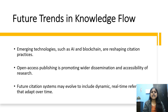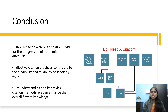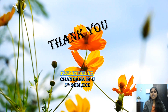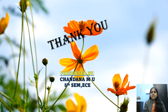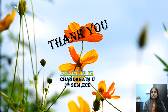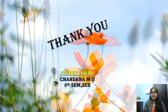Future citation systems may evolve to include dynamic, real-time references that adapt over time. Emerging technologies such as AI and blockchain are reshaping citation practices, and open access publishing is promoting wider dissemination and accessibility of research. Knowledge flow through citation is vital for the progression of academic discourse, and effective citation practices contribute to the credibility and reliability of scholarly work. By understanding and improving citation methods, we can enhance the overall flow of knowledge. Thank you — please like, share, and subscribe to my YouTube channel and stay tuned for more interesting videos.